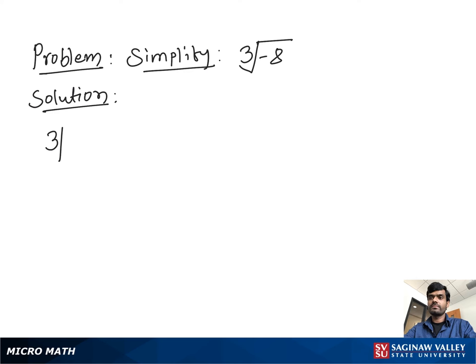Simplify the cube root of negative 8. To find the cube root of negative 8, we have to find a number which we multiply 3 times by itself to get negative 8. If we multiply negative 2 times negative 2 times negative 2, that equals negative 8. So our final answer is negative 2.